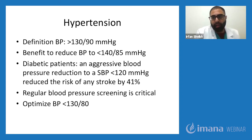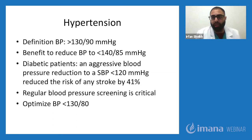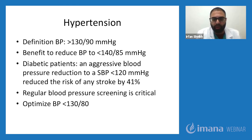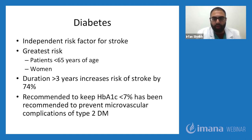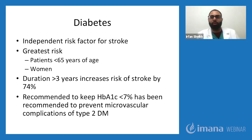Blood pressure is the most common risk factor for stroke development. The American Heart Association defines hypertension as blood pressure greater than 130 systolic over 90 diastolic mmHg. Reducing blood pressure to less than 140 over 85 carries a significant reduction in stroke risk. For diabetic patients, aggressively controlling blood pressure to less than 120 mmHg systolic can actually reduce the risk of stroke by 41%. We recommend all patients to undergo regular blood pressure screening at home and to have their blood pressure optimized to less than 130 over 80.